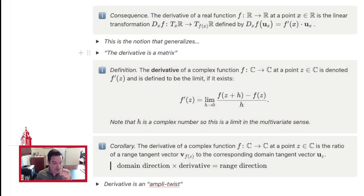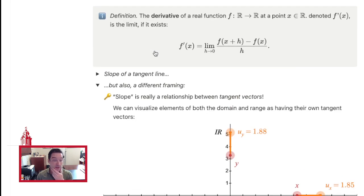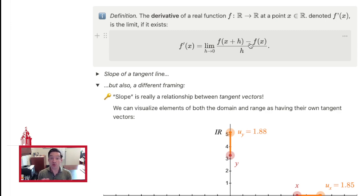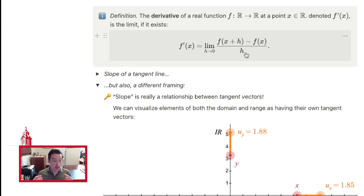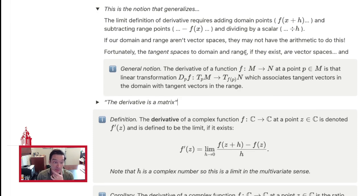If we're still thinking of just slopes of tangent lines of real valued functions, we lose the ability to understand what the derivative ought to mean in contexts where the domain and codomain are not simply the real number line. In order to generalize the idea of the limit of a difference quotient — which is how we define a derivative in the real case — we need to be able to do x plus h, meaning we need to add entries in the domain, subtract f(x+h) minus f(x), subtract elements of the codomain, and divide the whole thing by a scalar h. There's arithmetic required in order to even define a notion of derivative using the limit of a difference quotient idea, and in general we may not have that arithmetic at all.